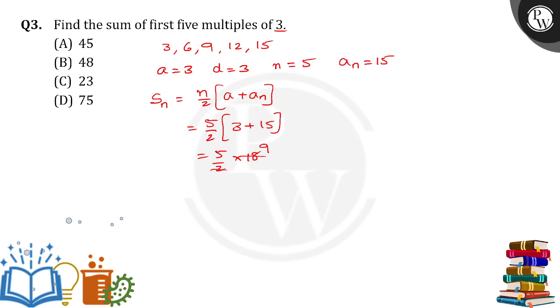It cancels, 18 by 2 is 9 times 5, giving 45. So the correct answer is 45. Thank you.